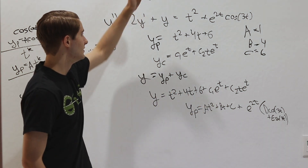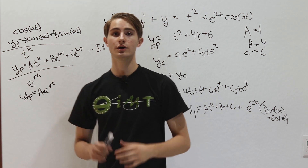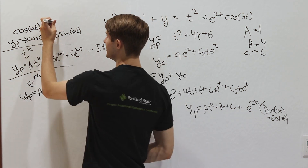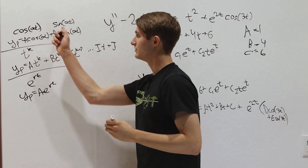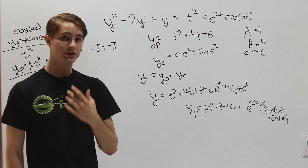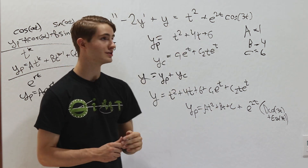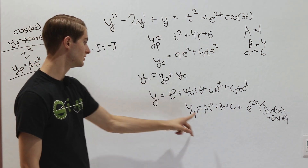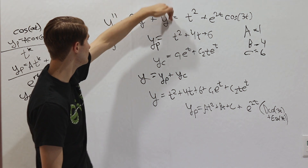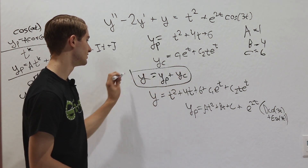No matter how complex these solutions look, as long as they're products and sums of these function types, we can always find a solution. Also, if you have sine(at) on the right side, the guess is the same as for cosine(at). To summarize: use these guesses with the product and sum rules to find the particular solution, then find the complementary solution from the homogeneous equation, and add the two for your final answer.